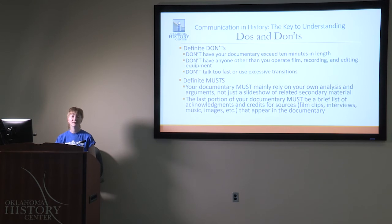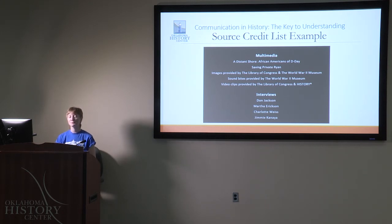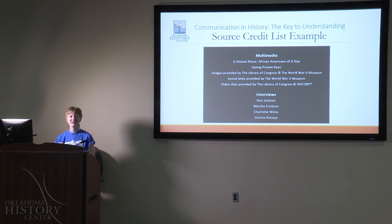The last portion of your documentary needs to be a brief list of acknowledgements for the sources that are there. It doesn't have to be a very long list like in your bibliography that you're going to turn in, but it needs to be something like this. This is a good example of an end title source credit list. You see at the top they have multimedia that they used — it cites where they got images, where they got sound bites or video clips. You can see that they used clips from Saving Private Ryan, the movie. It's a very brief, open way just to say this is what we had there at the end. It also cites who they did their interviews with.